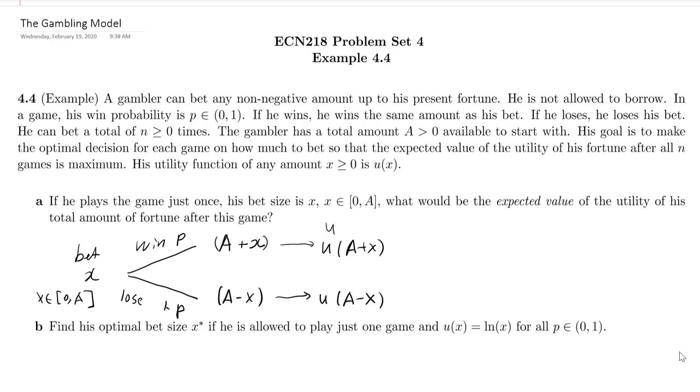But these two quantities, these two utilities are not certain. He has the probability P to get u of A plus x, and he has the probability 1 minus P to get u of A minus x.